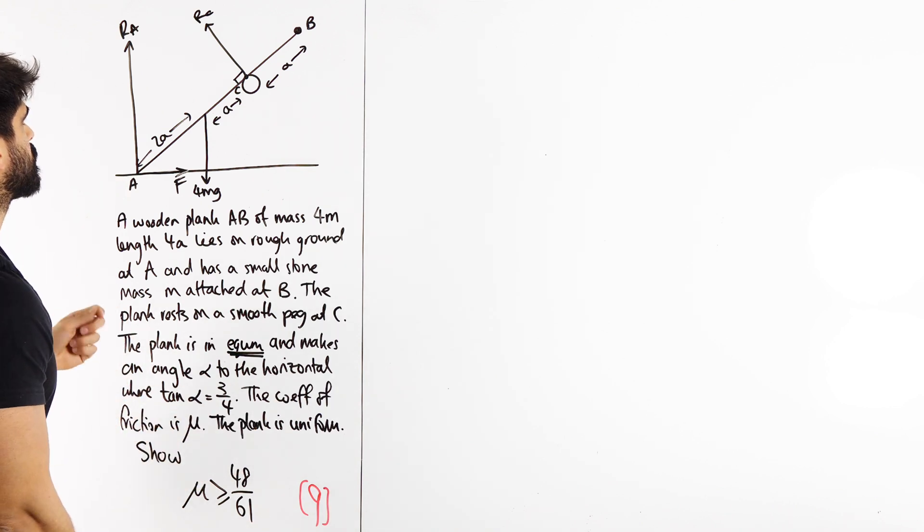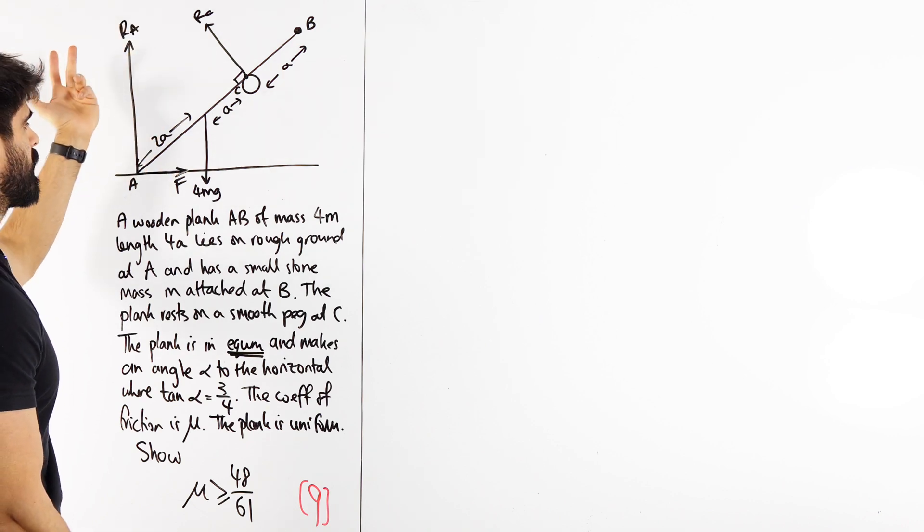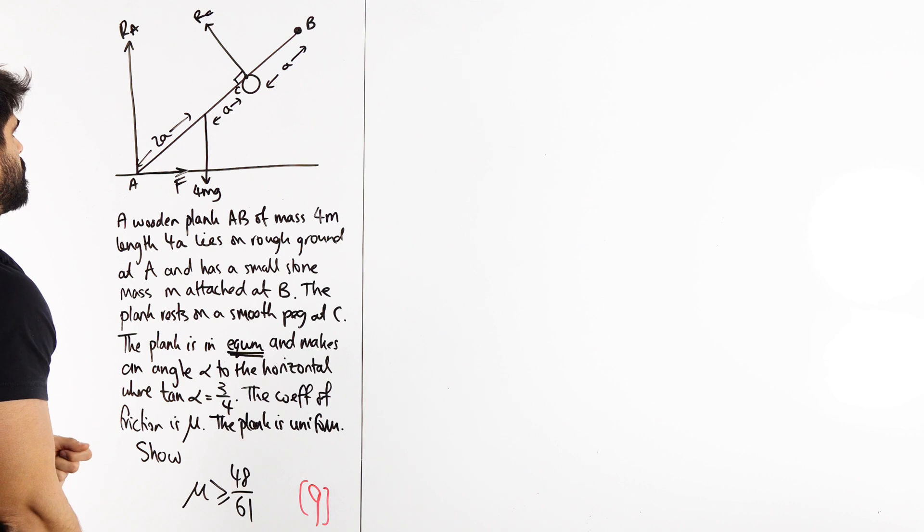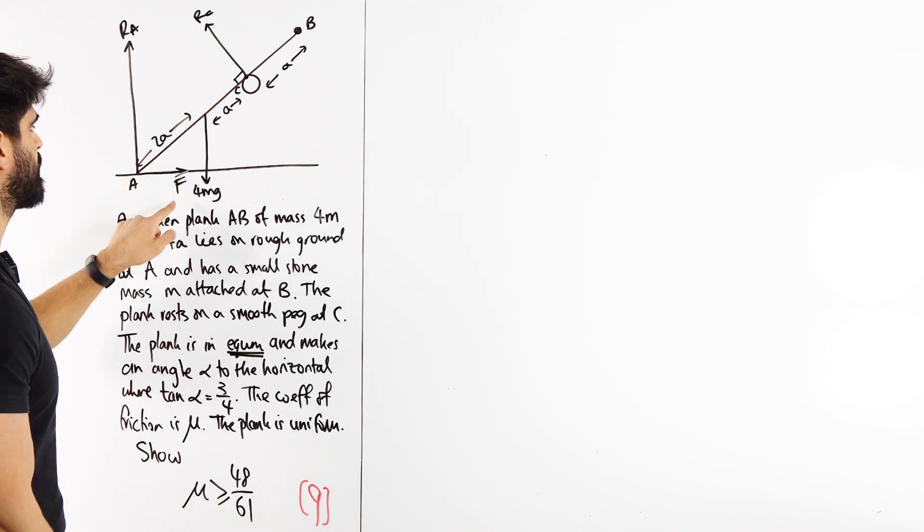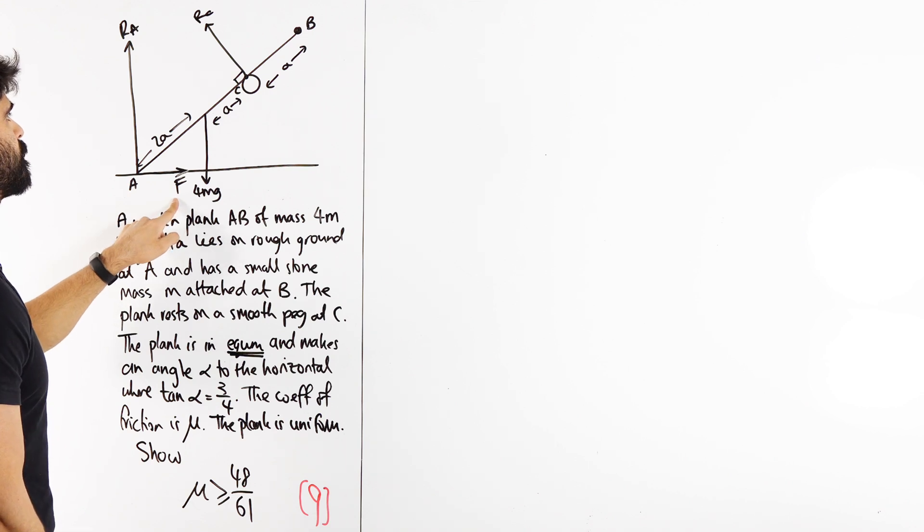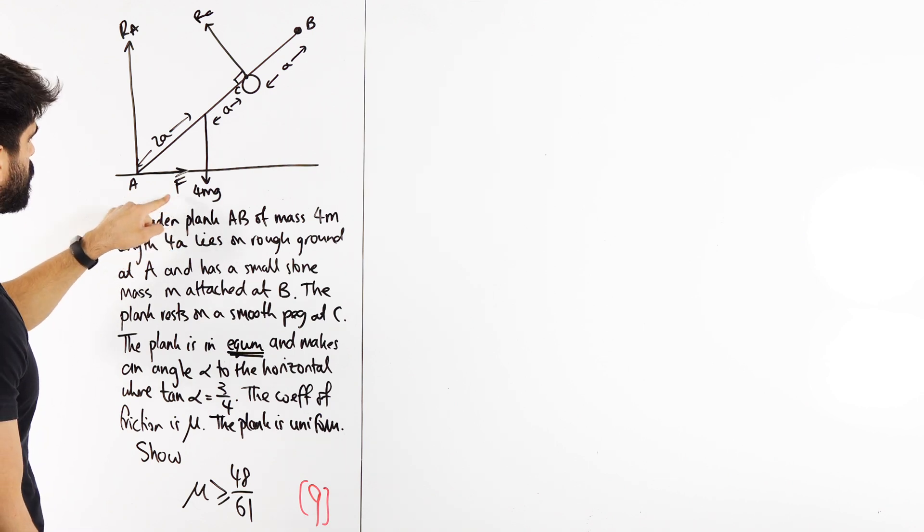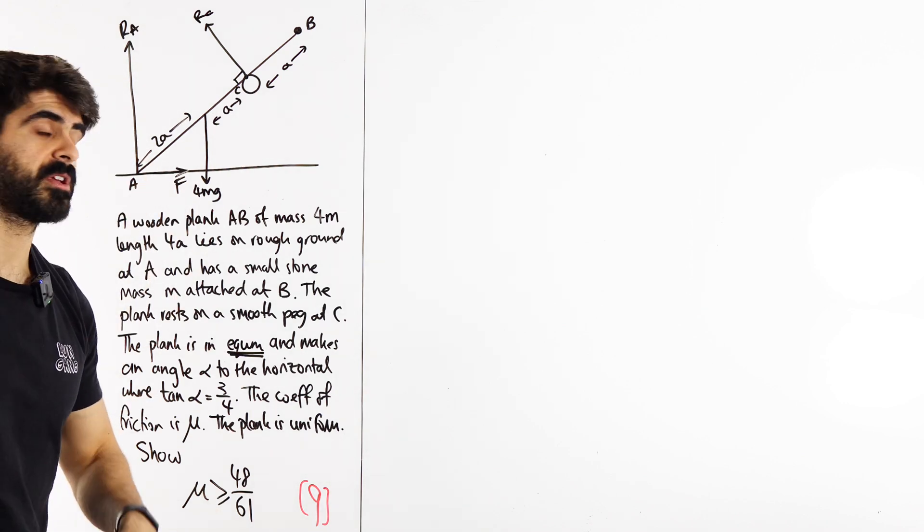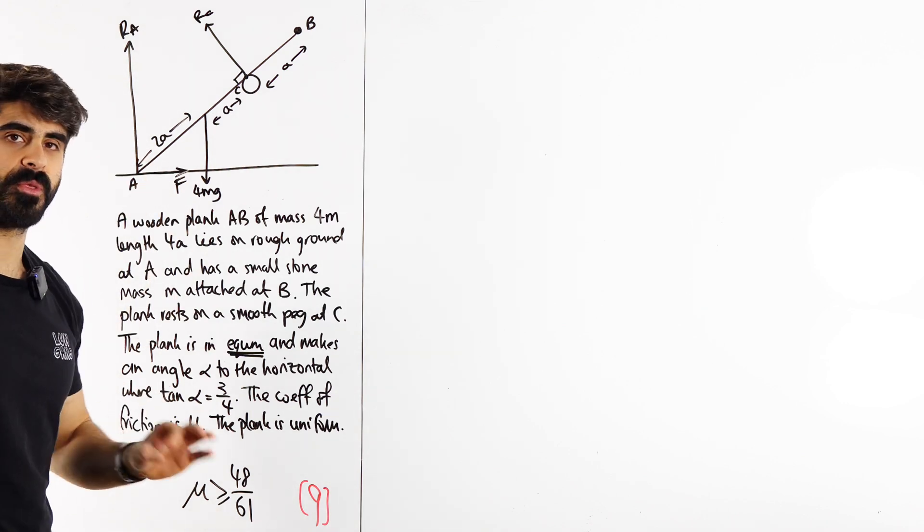Which one's the most obvious thing to do first in this case? It's to take moments. Because if we do up, down, left, right, there's so many unknowns we just can't do it. Where do you want to take moments from? Now a lot of students might say take moments from about C to help us find F because that's the goal. But by doing that, you actually have F unknown and RA unknown. It doesn't actually help us.